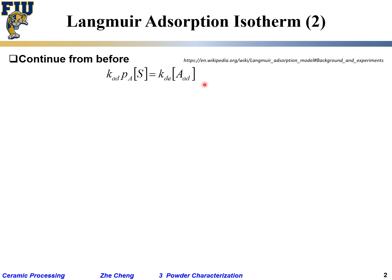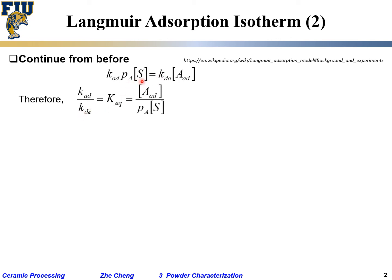Based on the equilibrium condition, we rearrange the equation: move the desorption rate constant to the denominator and define this ratio as the equilibrium constant Keq. Then we move pa times [S] to the denominator on the other side. This gives us our so-called equilibrium constant expression.